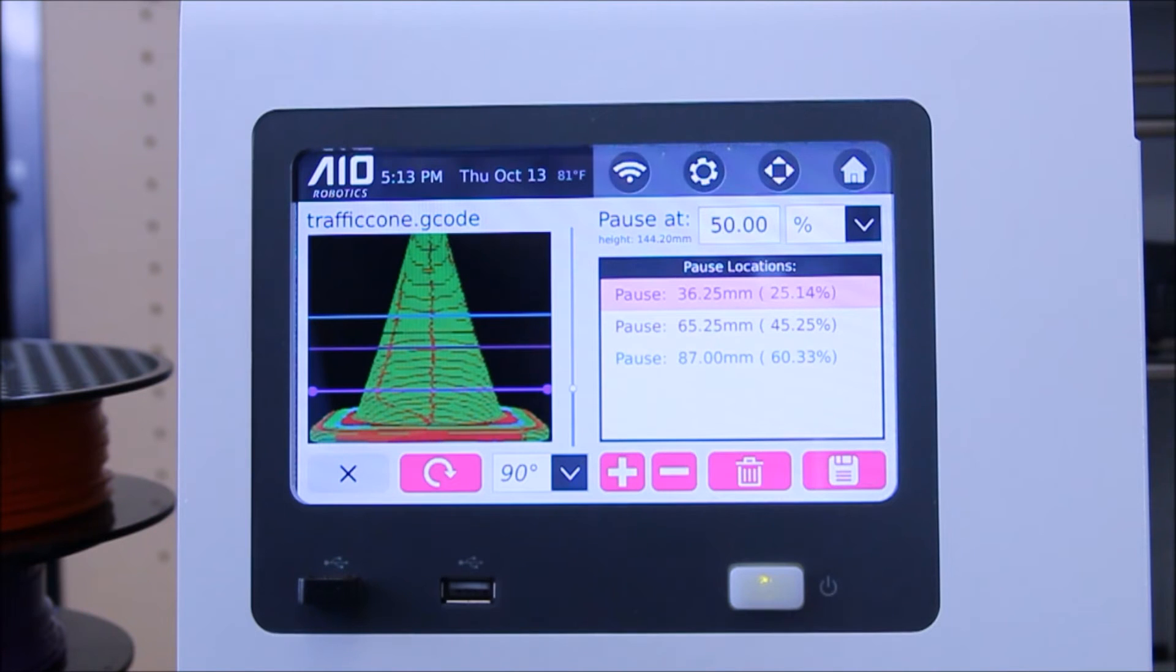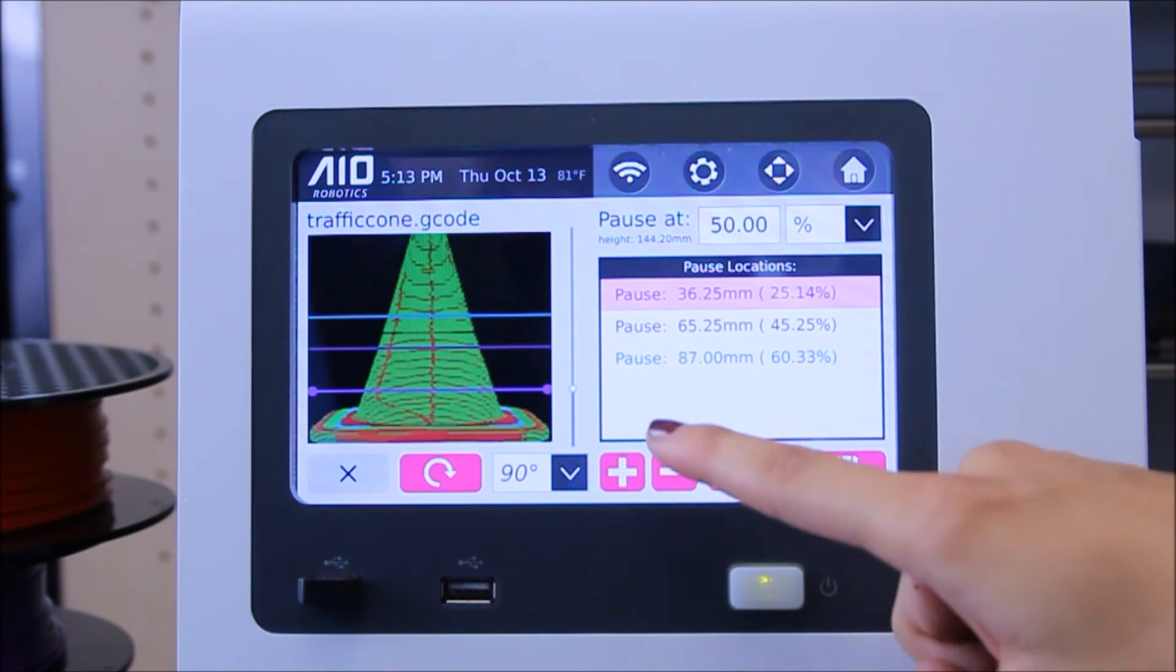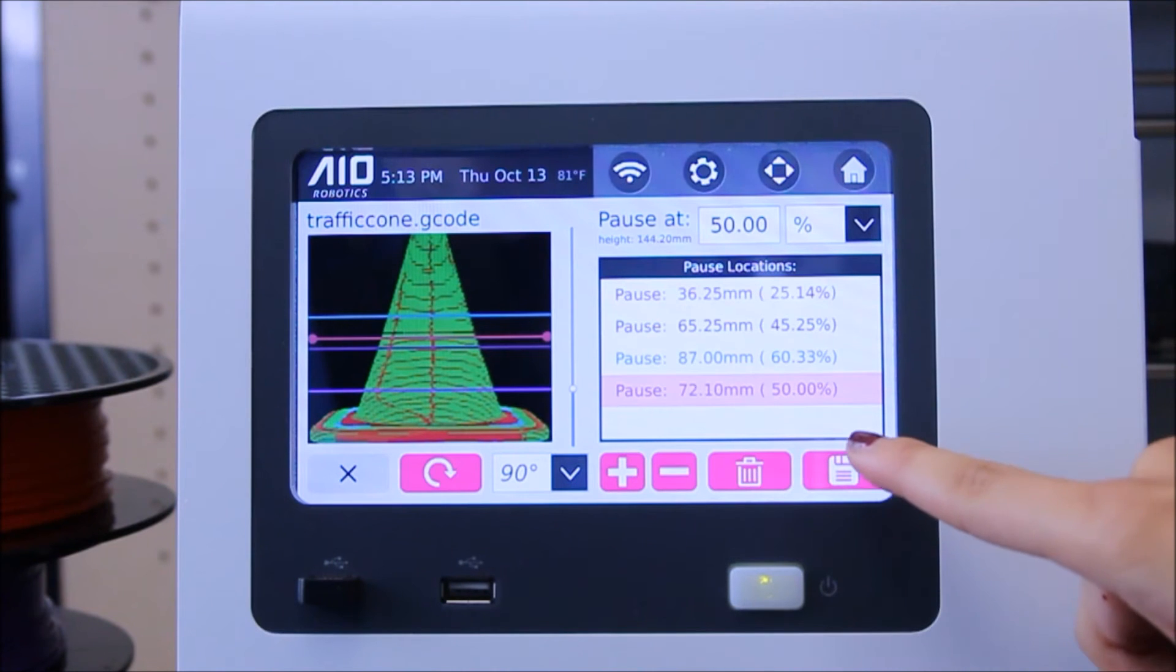For this demonstration, I will add an extra pause point at the 50% mark. After you choose each point you would like the printer to pause at, simply hit save and continue to print your file as you normally would.